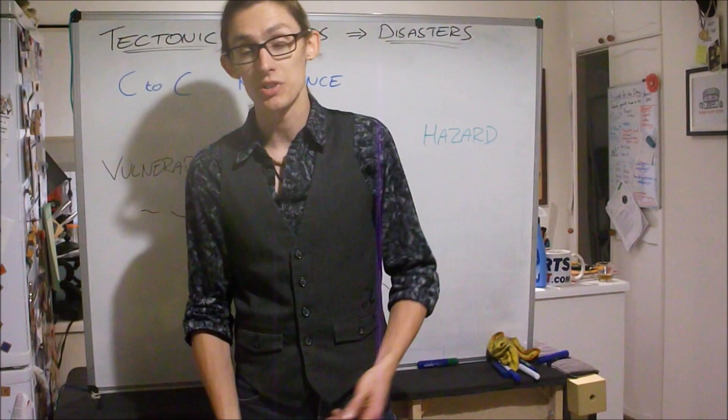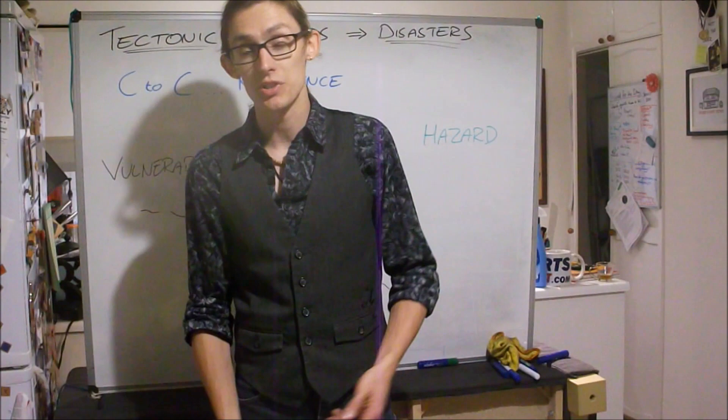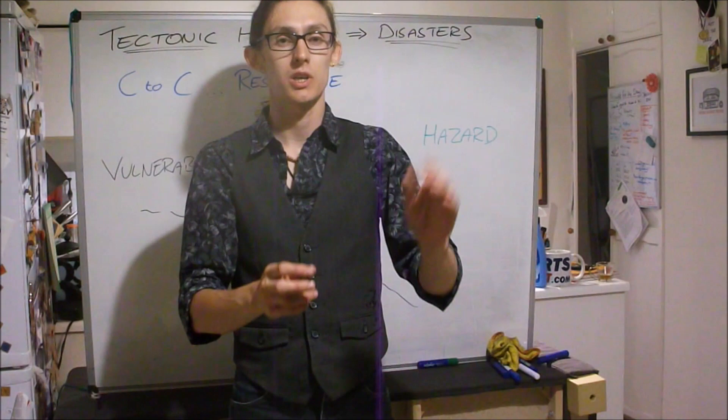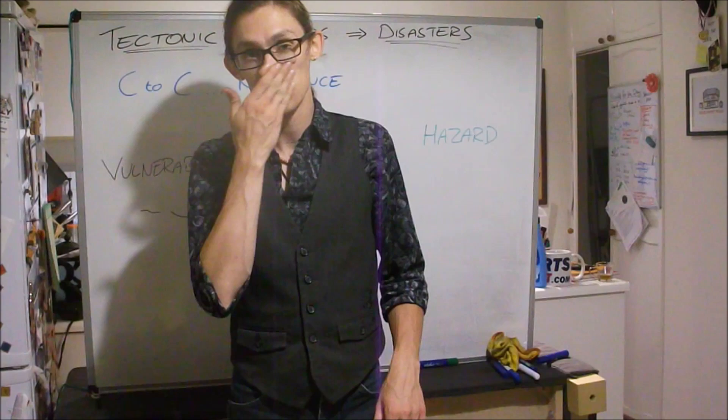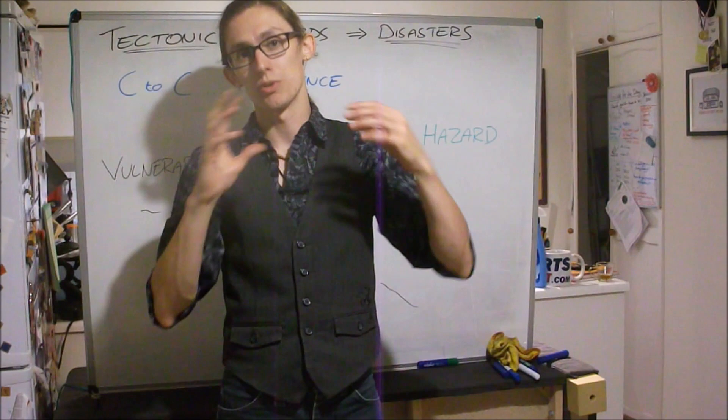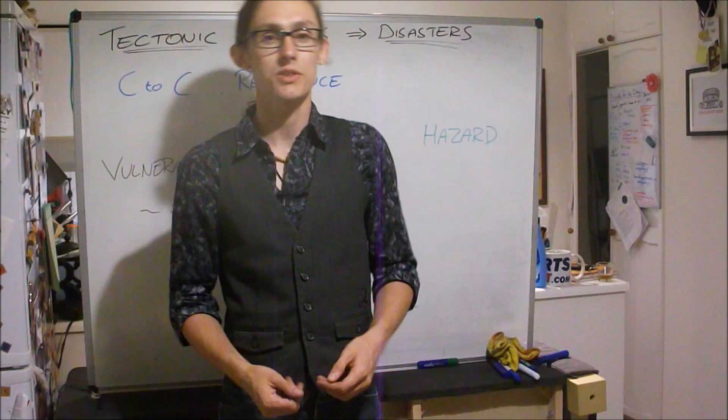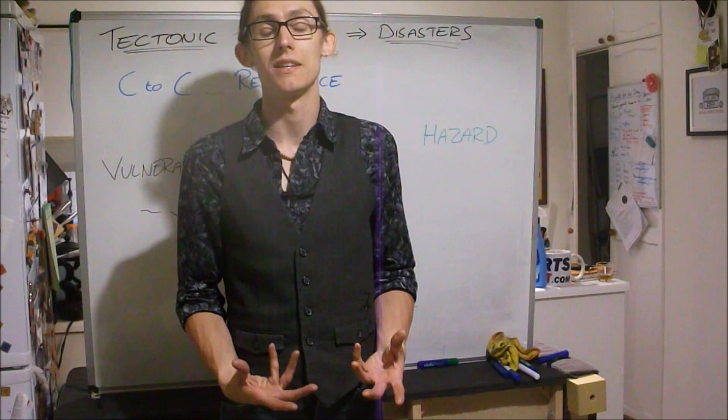If you have gone ahead and watched those, you'll be familiar with the term risk, which we understand to be hazard times vulnerability divided by capacity to cope. That's the risk of a disaster happening — hazard and vulnerability multiplied together, but that risk is reduced by how well you can cope, your capacity to cope, or as the term is used more now, resilience.